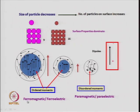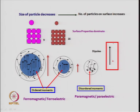From ordered moments you go to disordered moments: from ferromagnetic to paramagnetic, and from ferroelectric to paraelectric. For dielectric properties, the ferroelectric-to-paraelectric transformation is the most important. In all systems with ferroelectricity, as you decrease particle size the material tends to lose its ferroelectricity because ordered dipoles decrease, and eventually you end up with only disordered dipoles — going from ferroelectric to paraelectric.